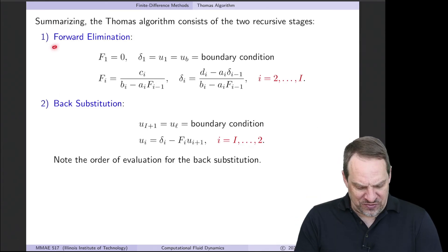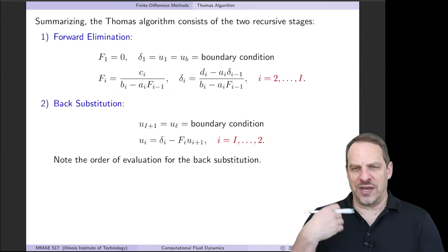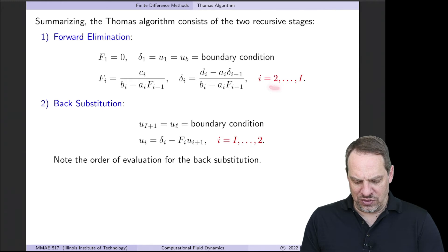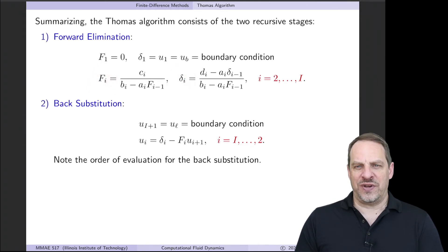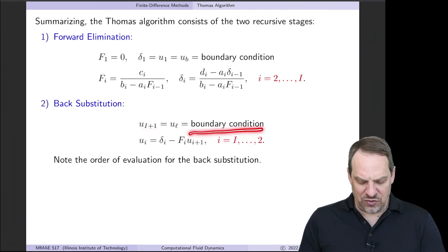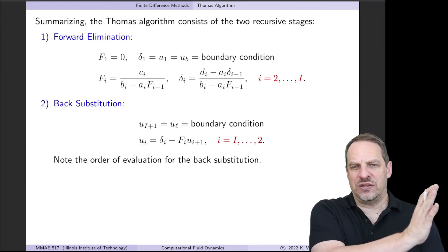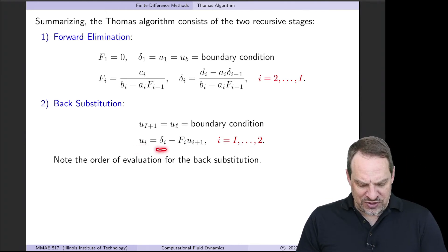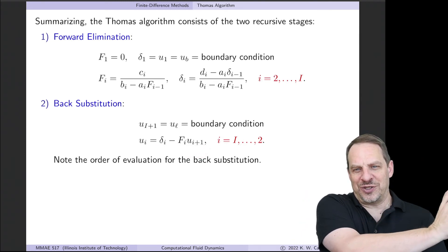So if you summarize those two steps, the forward elimination, you have your capital F1, delta 1 comes from the boundary condition, and then the FI, delta I expressions. These simple recursion expressions that you build up 2, 3, 4, up to capital I. Once you've completed this, you then have an array or a vector of all the F values and all the delta values. Those then get used in the back substitution step. You start at the right end of the domain at U sub cap i plus 1, which is the right boundary condition. And then you work your way backwards to get the solution U's in terms of the deltas and the F's that you've built up in the forward elimination step, and the solution that you just obtained at the next point to the right.